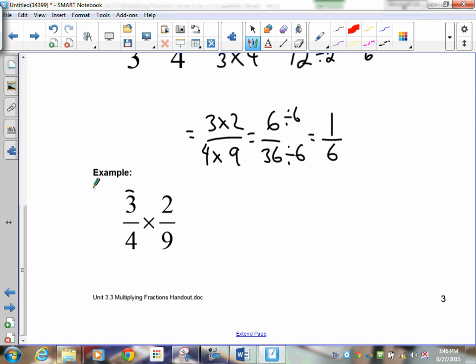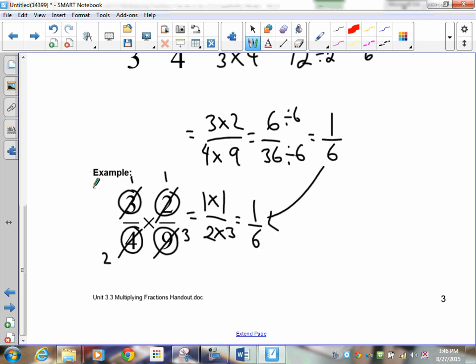We can still do it a different way. What if we were to cancel? Now, 3 and 9 are both divisible by 3. So 3 divided by 3 is 1. 9 divided by 3 is 3. 2 and 4 are both divisible by 2. So 2 divided by 2 is 1. 4 divided by 2 is 2. So now let's take a look at our numbers. 1 times 1 over 2 times 3. Your answer? 1 sixth. You should notice the answer is the same.